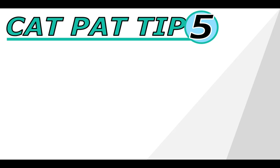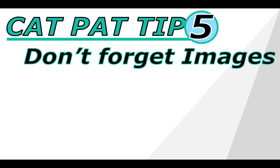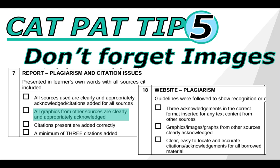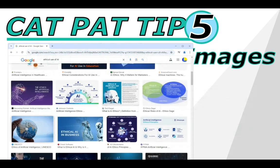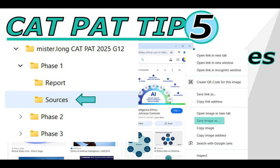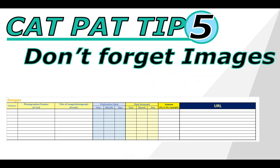CatPat tip number five is don't forget about images. There may be images you want in your phase one document to make it look more professional, or information you find from images. The rubric for phase three states that all graphics and other sources must be clearly acknowledged, and this is the same for your website — images displayed there also need to be clearly acknowledged. So while you are doing your research, if you come across useful images, make sure you save them to your sources folder. In the sources document I mentioned earlier, there is a section for images where you can keep track of the images downloaded, the publication date, date accessed, and where you got them from.